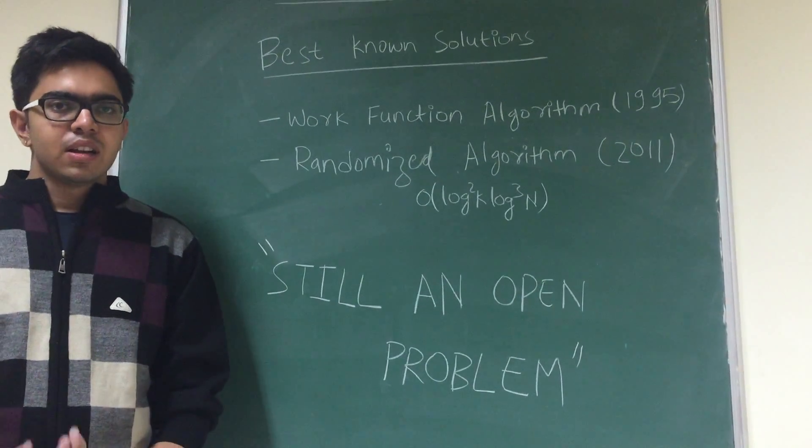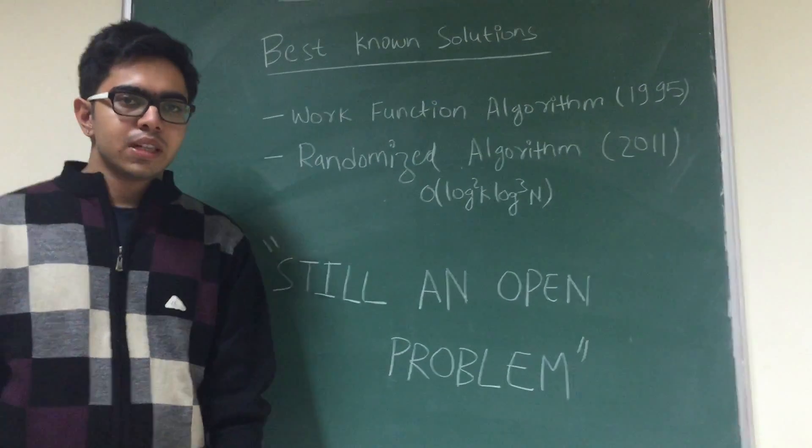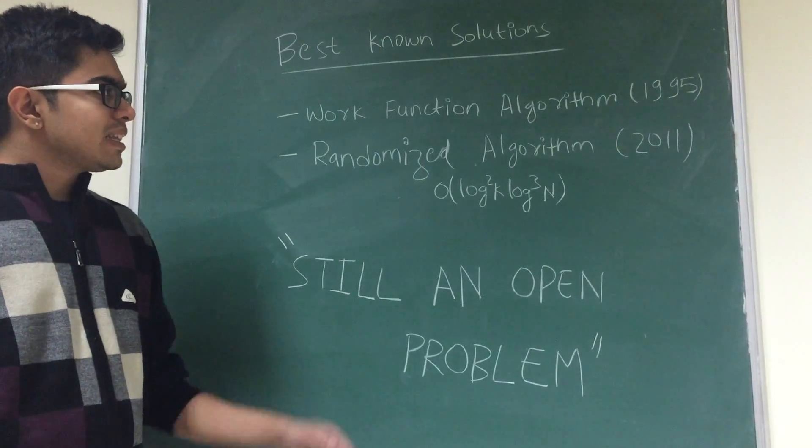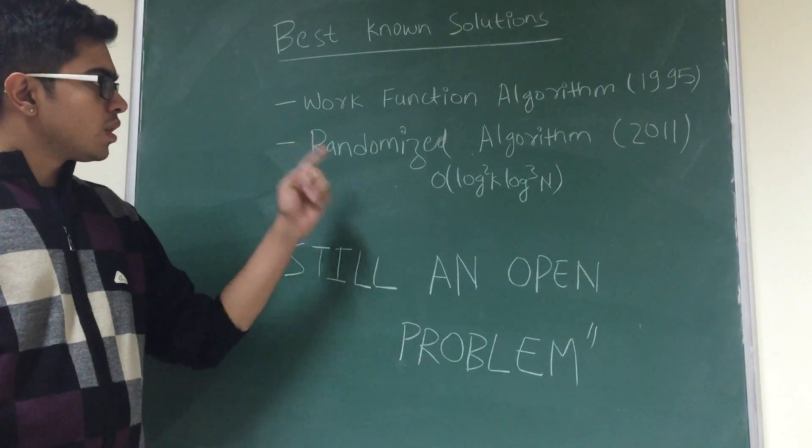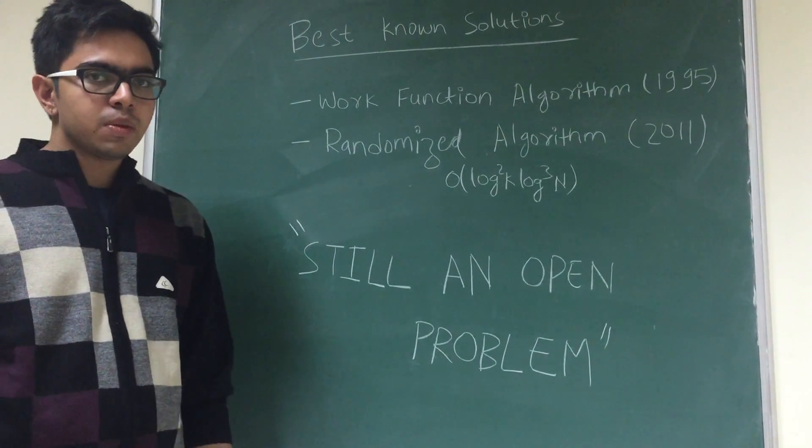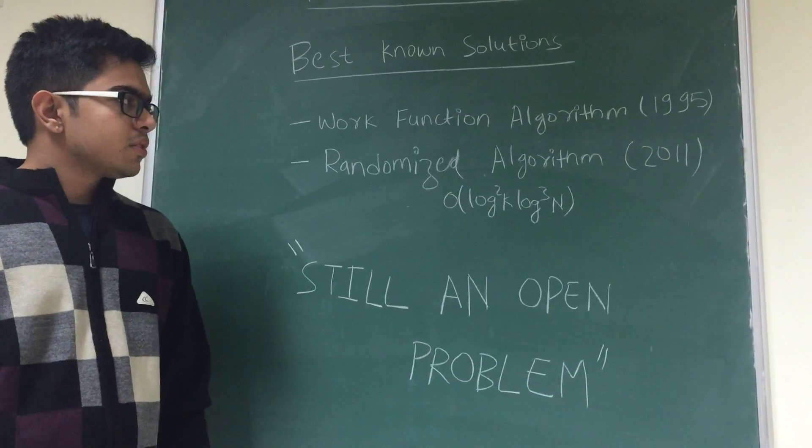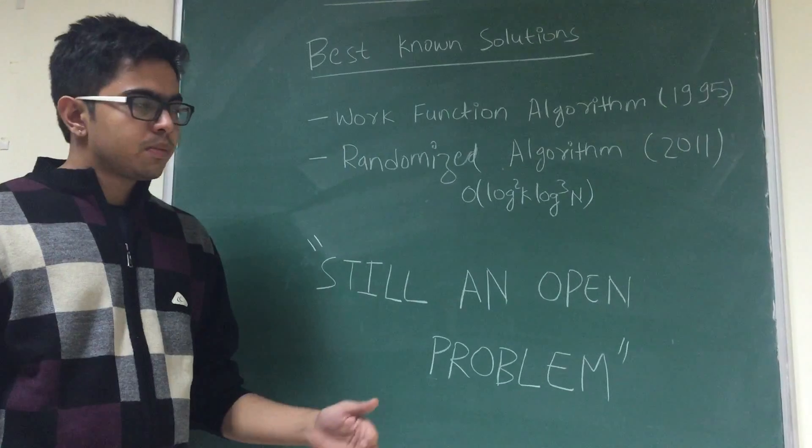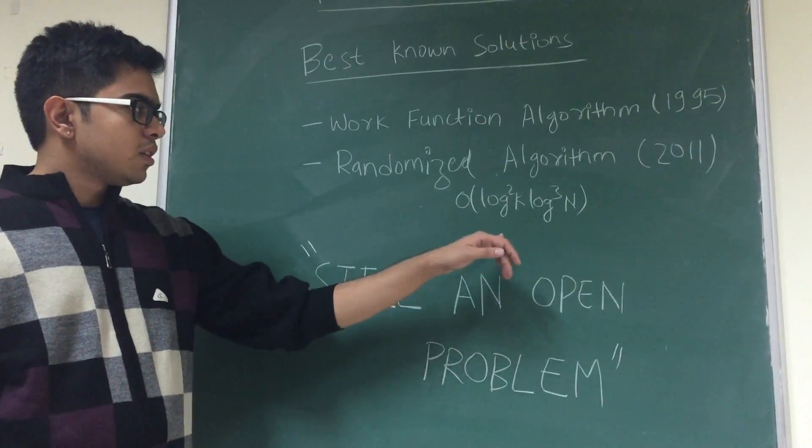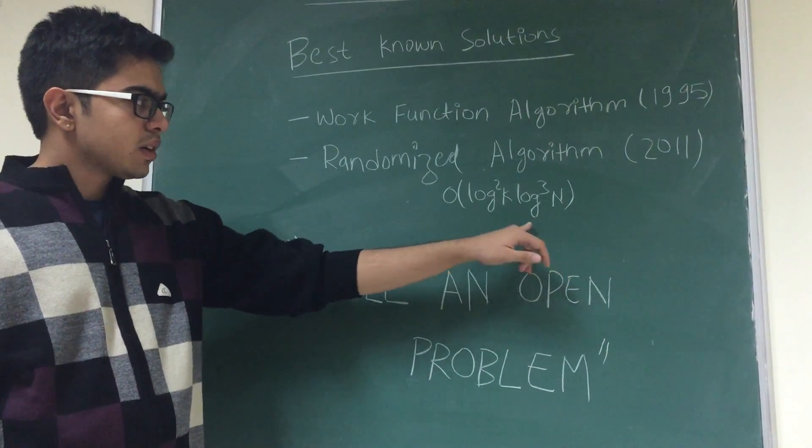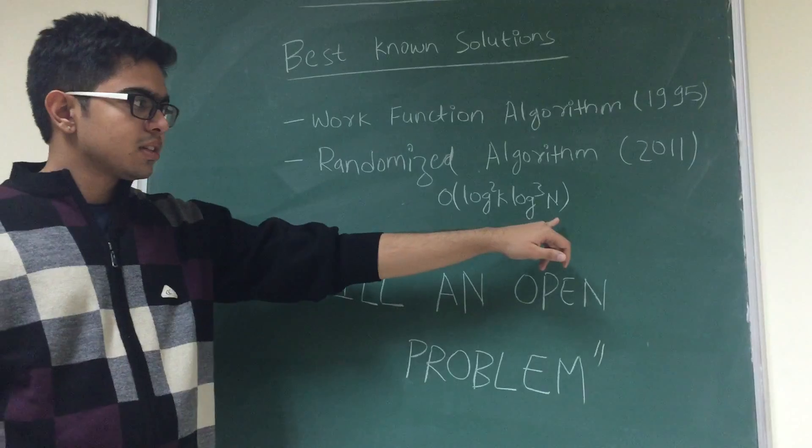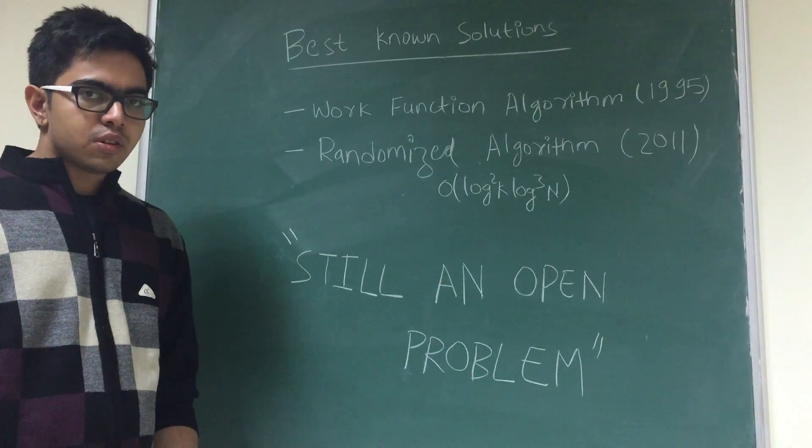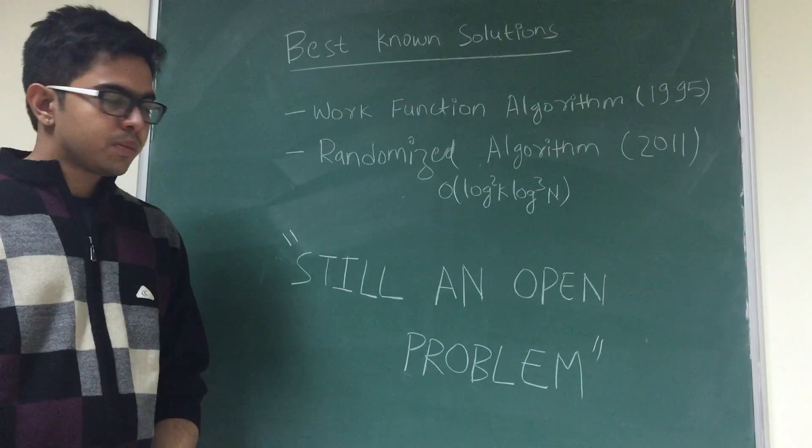Let's start. Having addressed a problem, now let's try to look at the best possible solutions that have existed so far. In 1995, there was this work function algorithm that was known to be best till 2011. In 2011, a randomized algorithm was proposed, which solves the problem in competitive bound of log square k and log cube n, where k is my number of servers and n is the number of requests. These are the two major known best possible solutions for the online k-server problem.